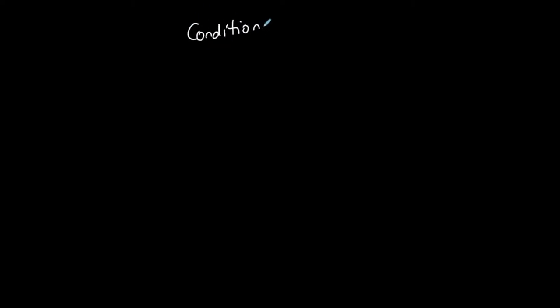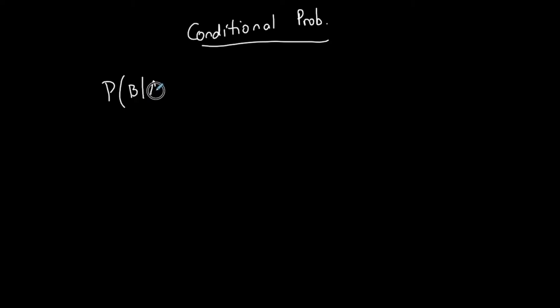Conditional probability — it's exactly what it sounds like: probability under specific conditions. Here is the formula: P of B given A, written as P(B|A), is equal to P of A and B divided by P of A.